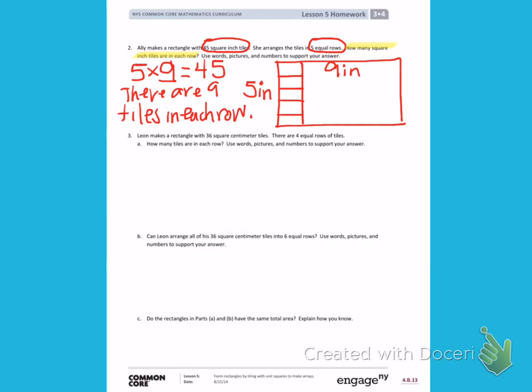Number 3. Leon makes a rectangle with 36 square centimeter tiles. There are 4 equal rows of tiles. How many tiles are in each row? Use words, pictures, and numbers to support your answer.